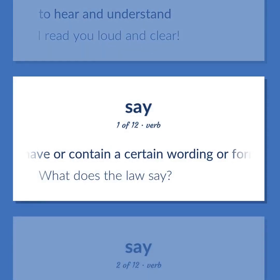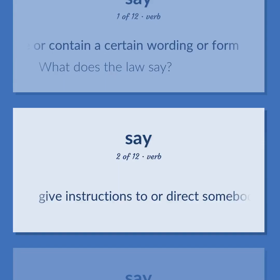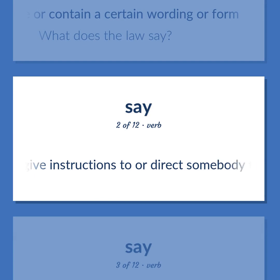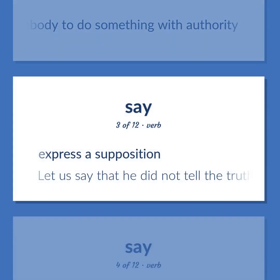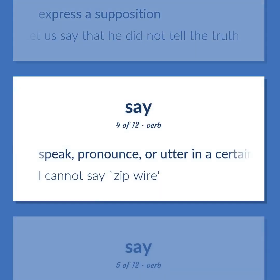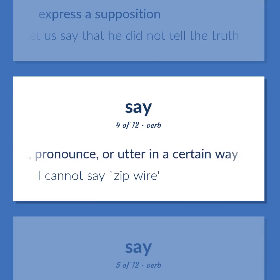Say: Have or contain a certain wording or form — what does the law say? Give instructions to or direct somebody to do something with authority. Express a supposition — let us say that he did not tell the truth. Speak, pronounce, or utter in a certain way — I cannot say 'zip wire.'